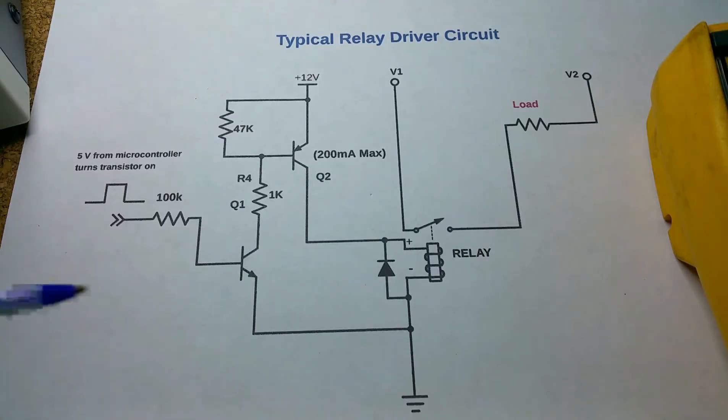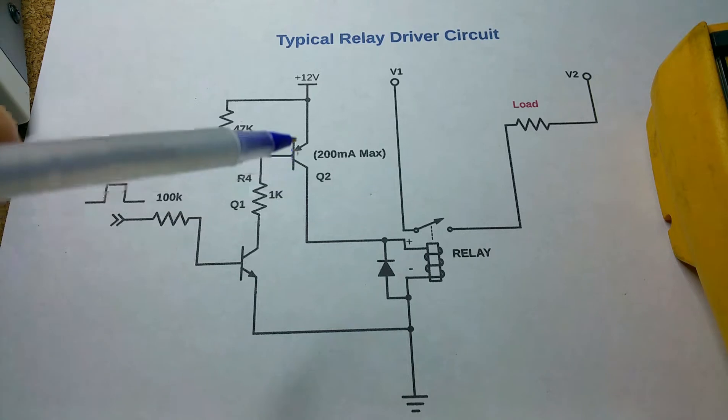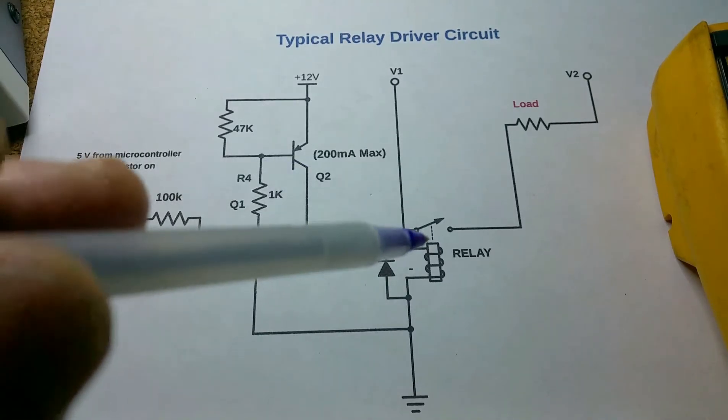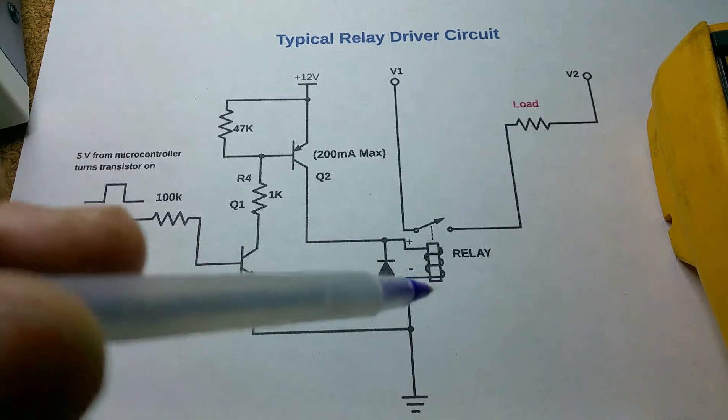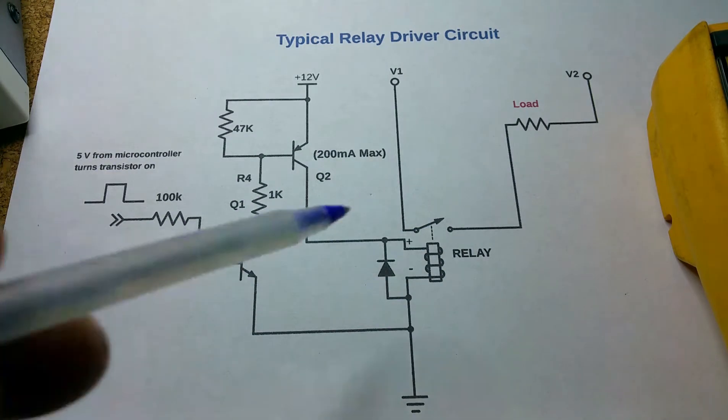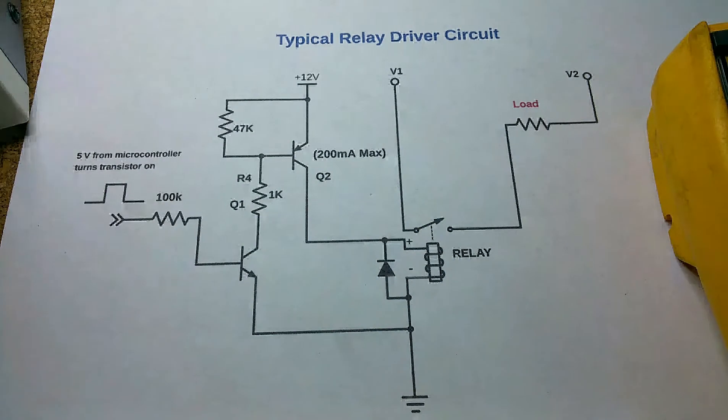So how do we energize the relay? Well, typically if you have a switch here you could just turn it on, and then you have 12 volts at the top of the relay, zero volts at the bottom. 12 volt difference across the relay is going to turn it on and then close the switch and turn the load on.